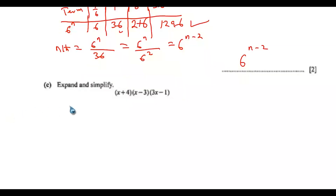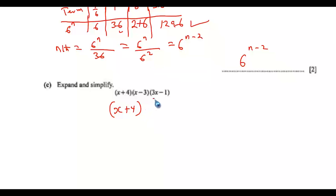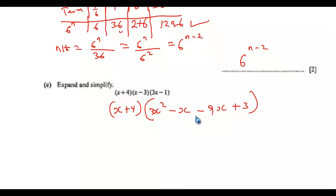Part c: expand and simplify (x + 4)(x − 3)(3x − 1). First we expand the last two brackets. x times 3x gives 3x², x times −1 gives −x, −3 times 3x gives −9x, and −3 times −1 gives +3. Simplifying, we get x + 4 multiplied by 3x² − 10x + 3.